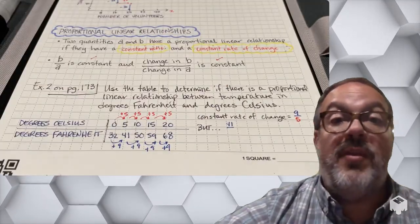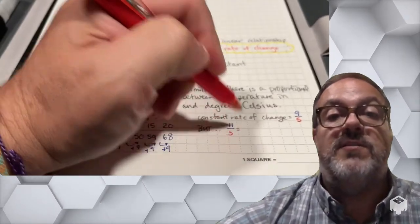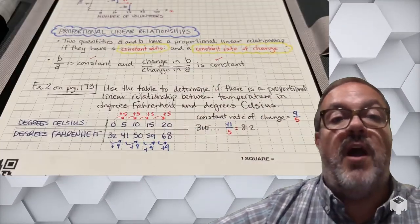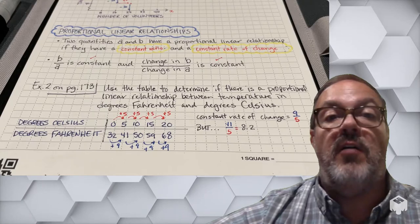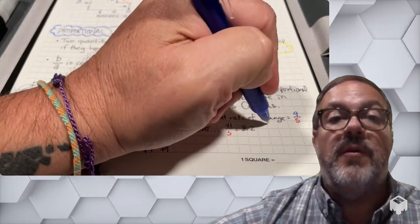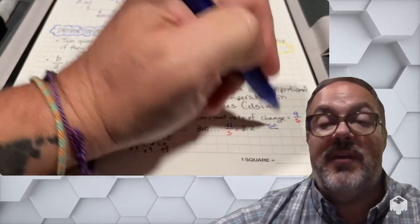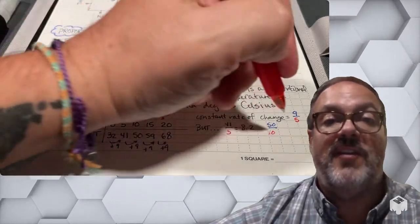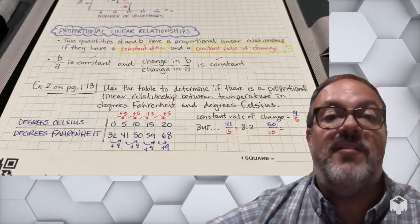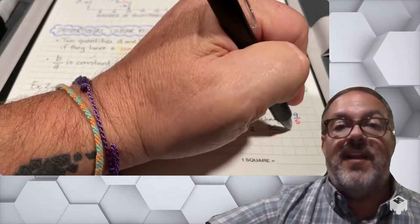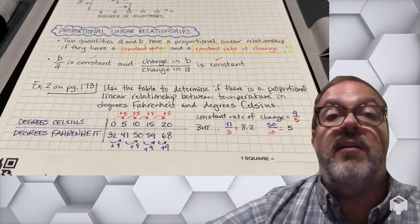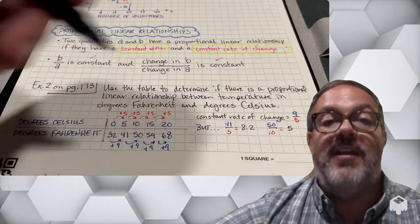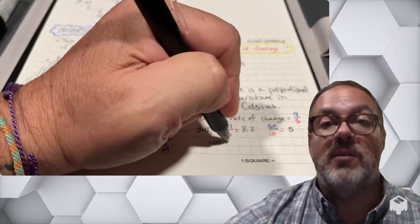The problem is going to be within the constant rate of change. If I look at 41 degrees Fahrenheit and 5 degrees Celsius, the rate is 8.2. Then comparing that to the next interval — 50 degrees Fahrenheit and 10 degrees Celsius — that rate is 5. Since those two rates are not equivalent, I do not have a proportional relationship.